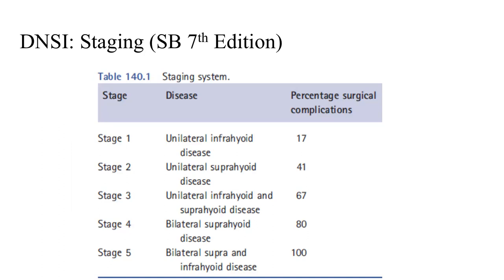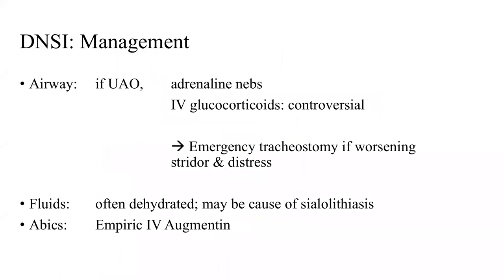A staging system for deep neck space infections is described in Scott Brown's seventh edition. It has five stages: stages one, two, and three are unilateral — infrahyoid, suprahyoid, or traversing the whole neck respectively; stages four and five are bilateral — suprahyoid and across the whole neck. There is proportionately increasing risk and incidence of surgical complications in higher stages.